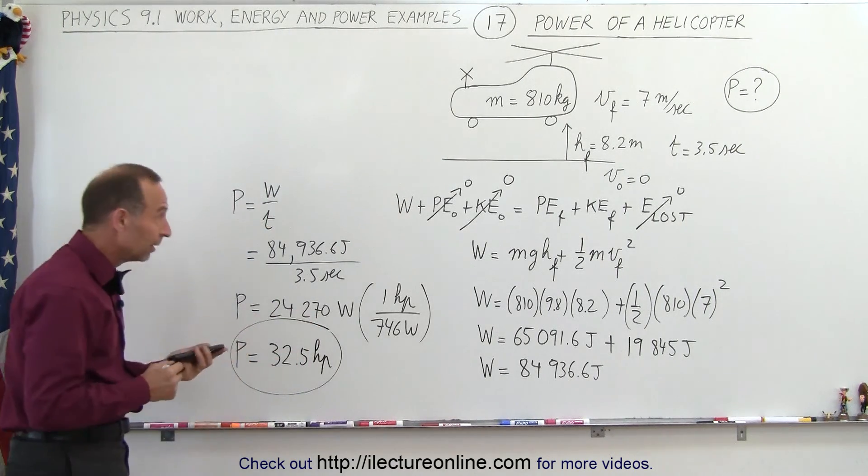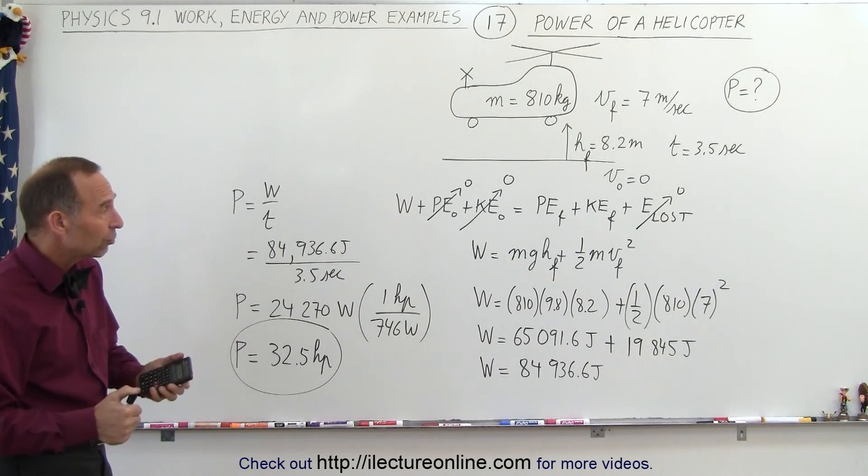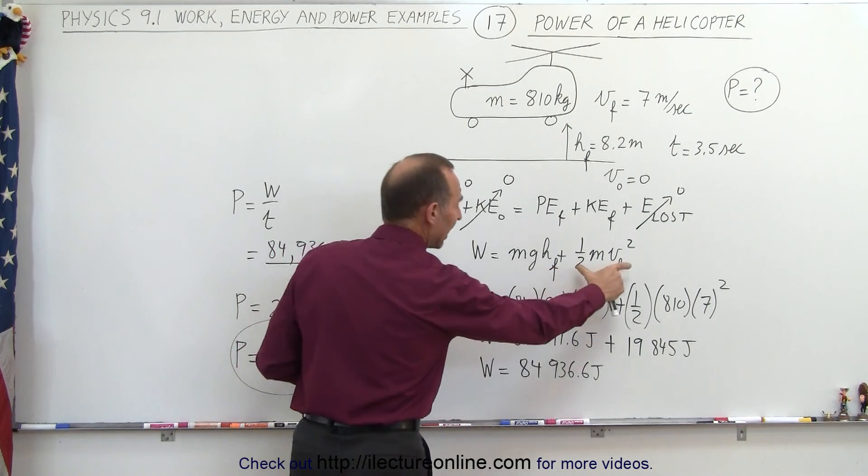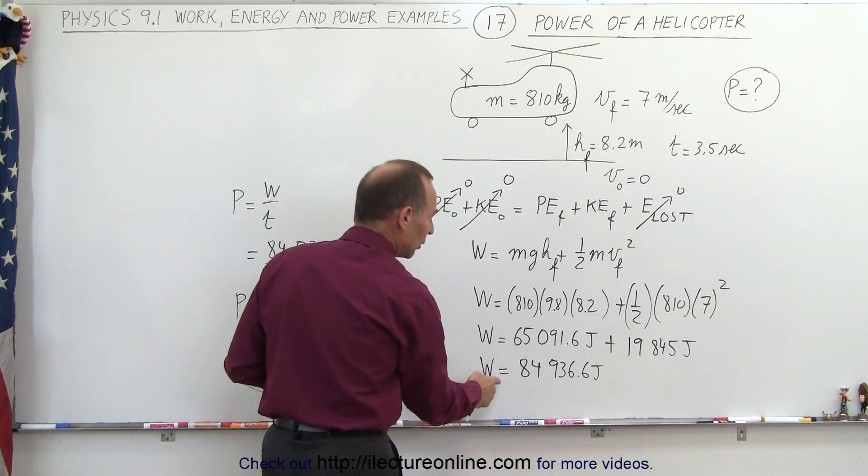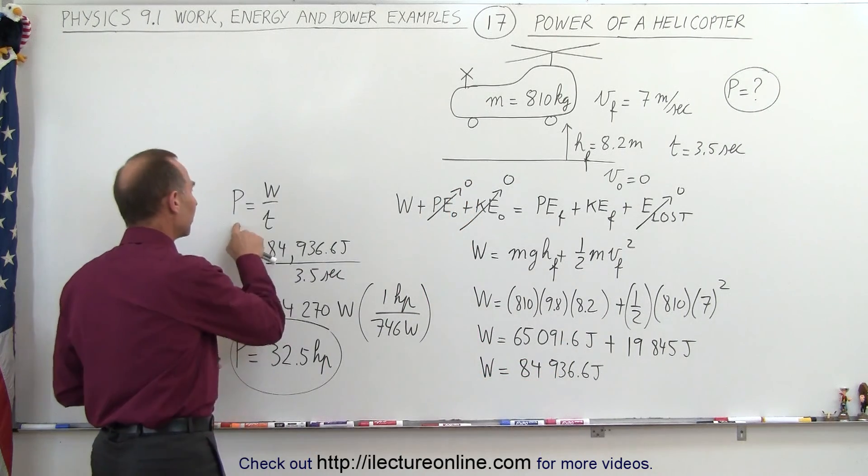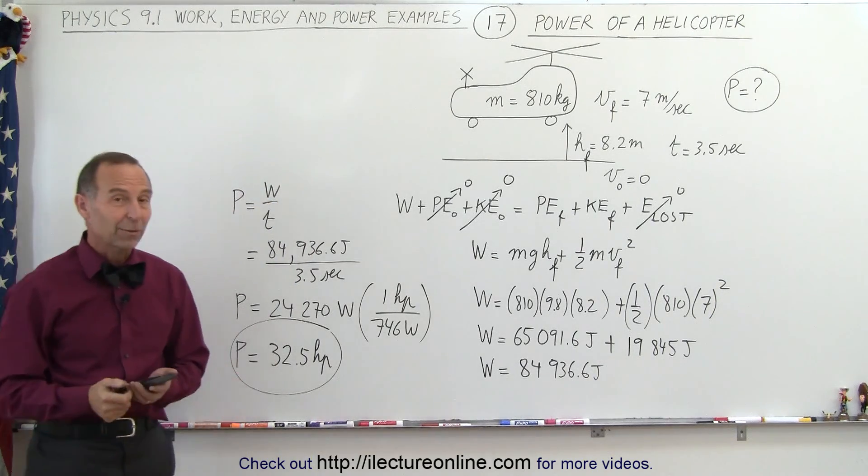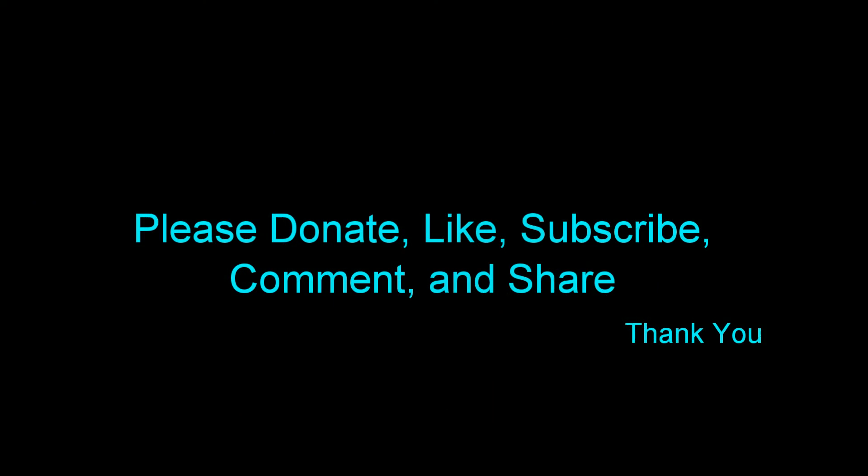All right. So that's how we do that. In this case, we had two things, two forms of energy we were gaining by putting in work. We were gaining potential energy and kinetic energy together. The total energy gained, which is the work done. And then the power is the work done, energy gained, divided by time. That's how we do that one. Thank you.